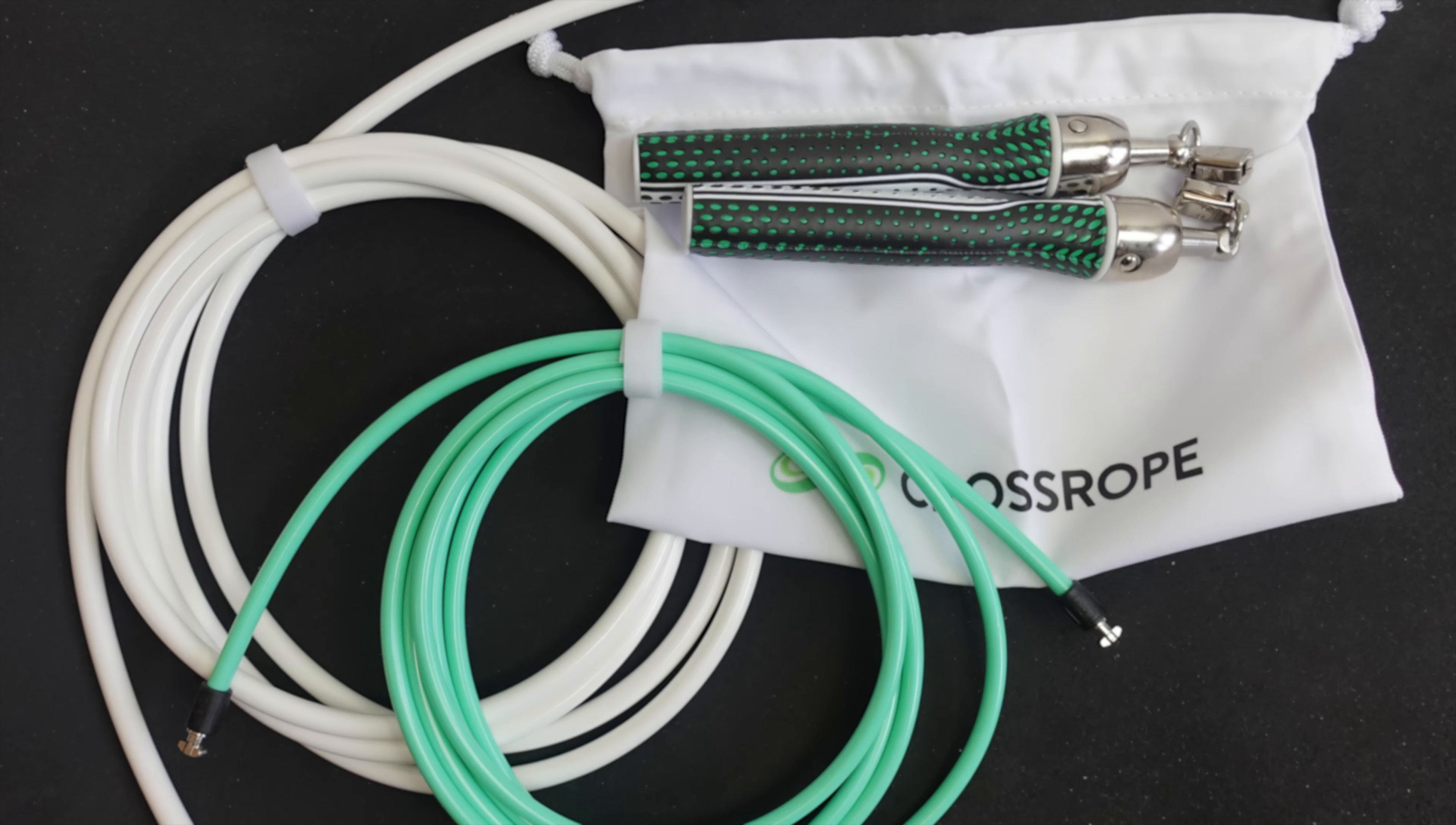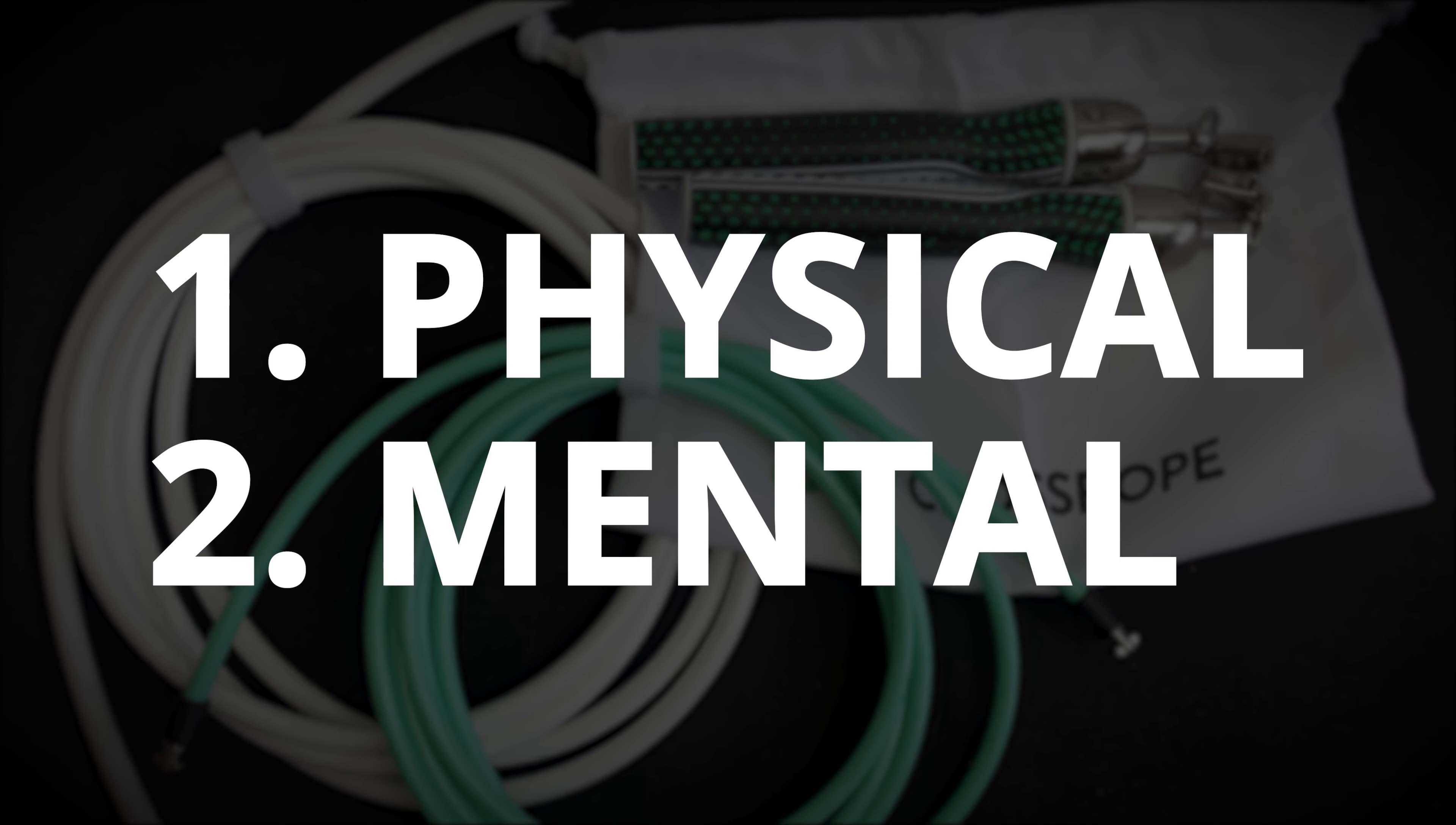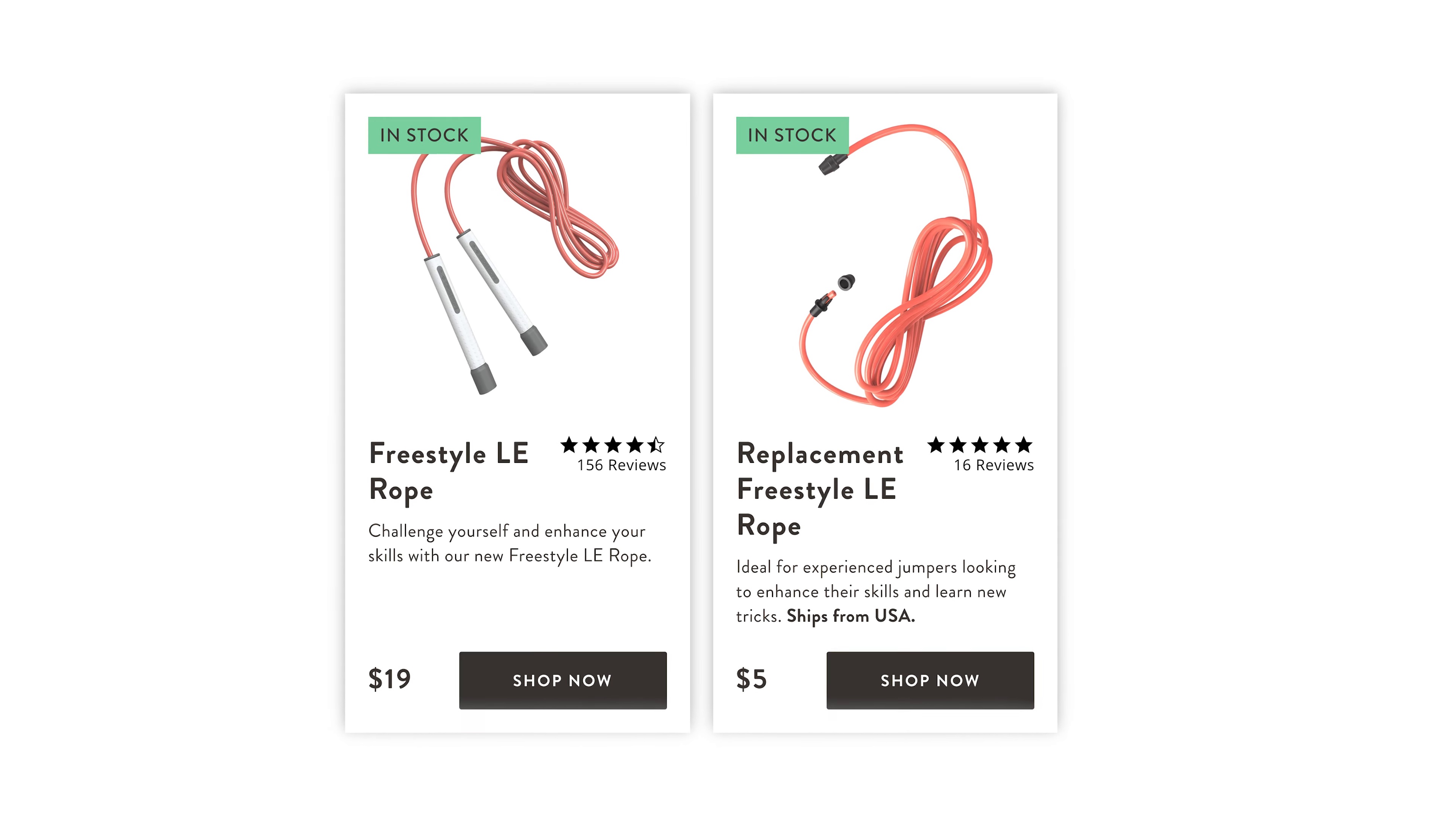Fresh air. So there you have it, the mighty Crossrope and all that it has to offer. Now, if you're not entirely sold on these ropes yet, but still want to start skipping for the physical and mental benefits, a cheaper option would be to simply just start out with a regular jump rope or grab one of their freestyle ropes, which are only about 20 bucks.